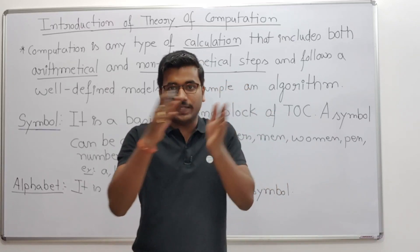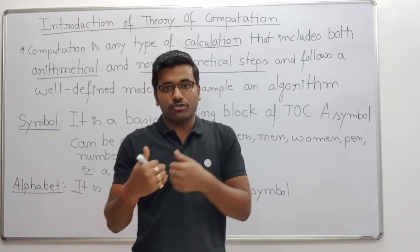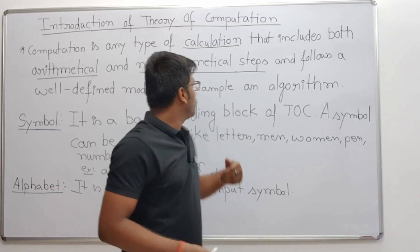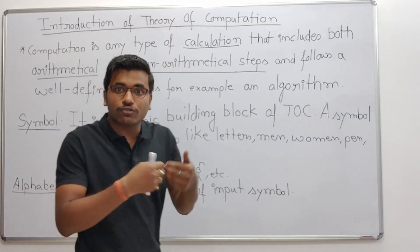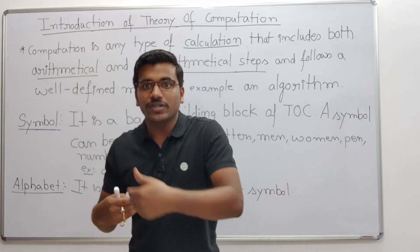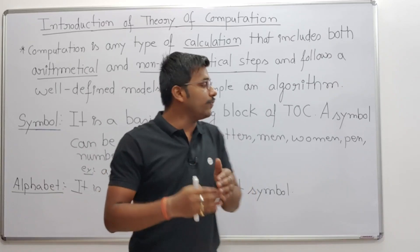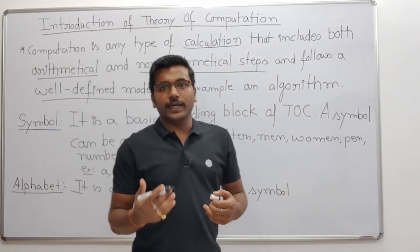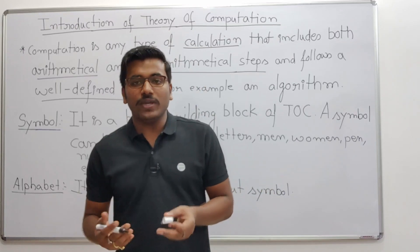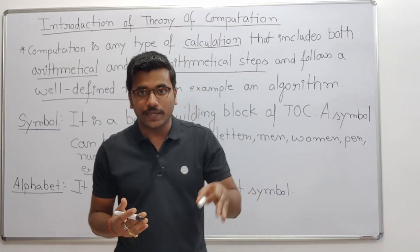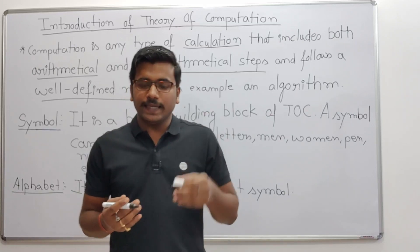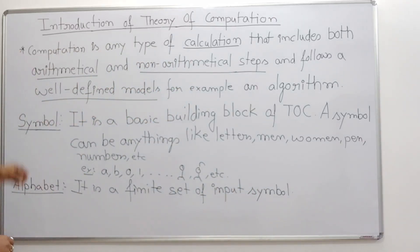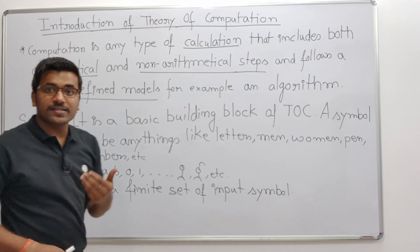It follows a step-by-step model. Arithmetic examples include: 2 plus 3, a plus b, 2 into 3. Non-arithmetic examples include: after 'a' there should be 'b', so 'a' should be followed by 'b'. It follows a very defined model. Whatever a calculator or computer does is also computation — either arithmetic or non-arithmetic steps.